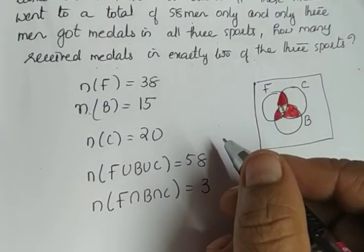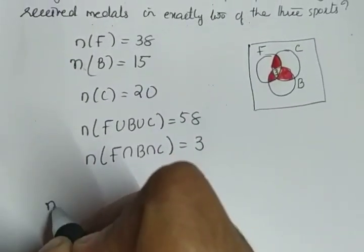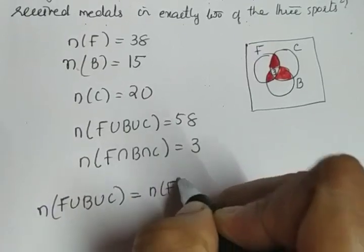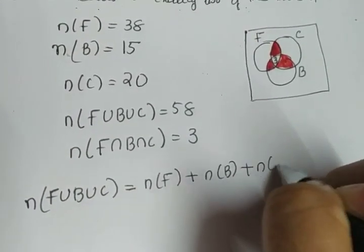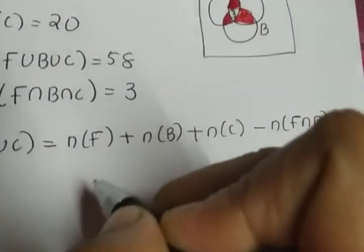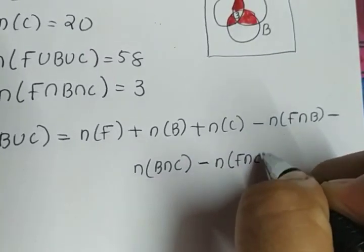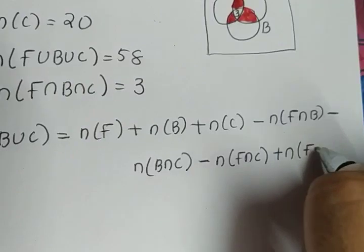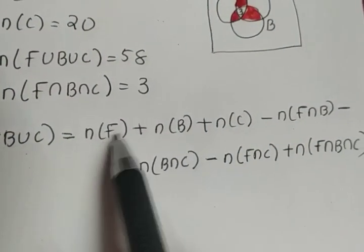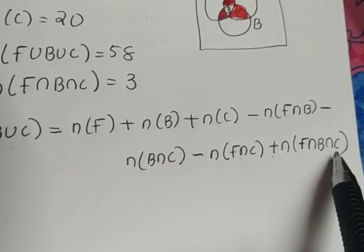We have a formula connecting 3 sets: N(F ∪ B ∪ C) = N(F) + N(B) + N(C) − N(F ∩ B) − N(B ∩ C) − N(F ∩ C) + N(F ∩ B ∩ C). That is, the number in single sports minus pairwise intersections, plus the intersection of all 3.